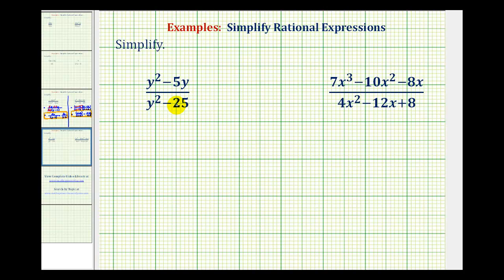We want to simplify the given rational expressions. To do this, we need to start by factoring the numerators and denominators. We cannot simplify these expressions until they are first in factored form, meaning we cannot simplify y squared over y squared because we cannot simplify across addition or subtraction.